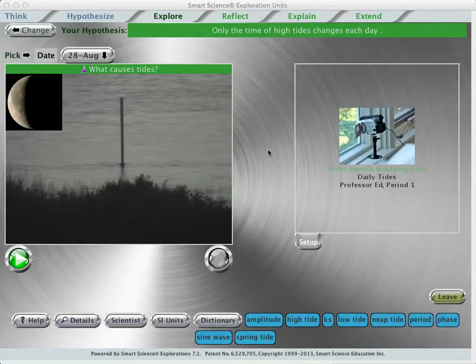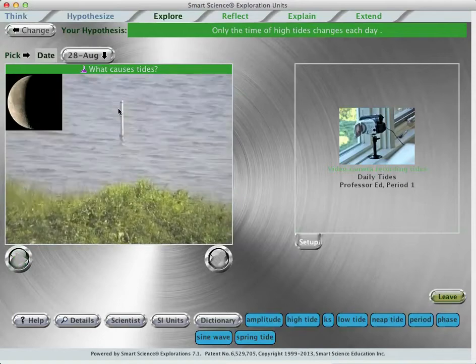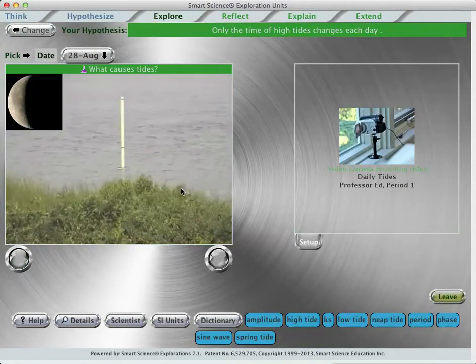The lab page itself is very special in Smart Science, because here we do our interactive video portion. Students get to view the real videos and measure right off of them as if they were doing the lab themselves in their own hands. In this particular lab, we're going to be looking at the tides going up and down. So here I'm going to watch a video of the tides on a particular day. This is August 28th.